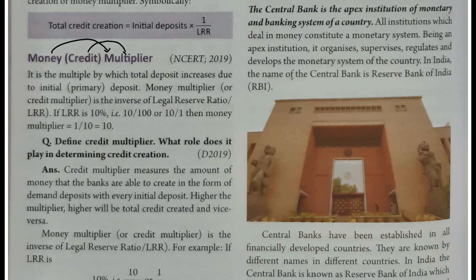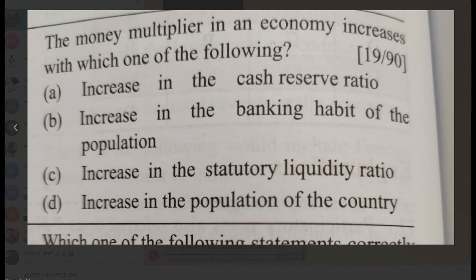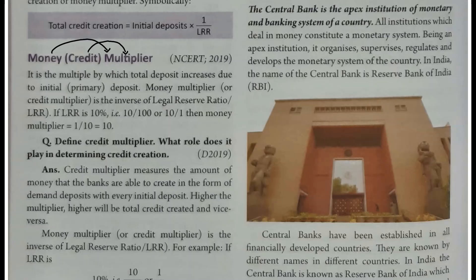Money multiplier ya credit multiplier - kuch bhi kaho - is baare mein hum log question bhi dekhenge. 2019 ke andar jo question aaya tha - 'money multiplier in an economy increases with which of the following' - jaisa ki Mizba ne aaj isko solve kiya tha apni curiosity se pehle hi. Uski analysis kaafi thi - legal reserve ratio ke funde ke basis par jo question analysis ki wo theek thi. Aur 2019 mein aisi koi standard book available nahi thi jisme LRR ya money multiplier ka concept itni aasaani se samajh aata, lekin CB Sajdeva tab bhi aapka kaam kiya karta tha.